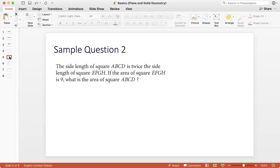Question 2. The side length of square ABCD is twice the side length of square EFGH. So let's say the side length of EFGH is X. Then the side length of ABCD is 2X. If the area of square EFGH is 9, what is the area of square ABCD? So X squared is given as 9, the area of the square. So X would be 3. If X is 3, then what is the side of ABCD? Side of ABCD is 2X, which is 6.